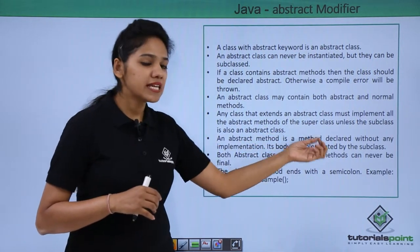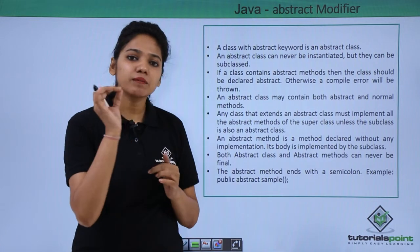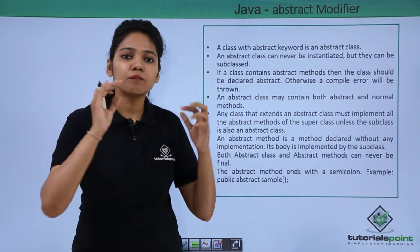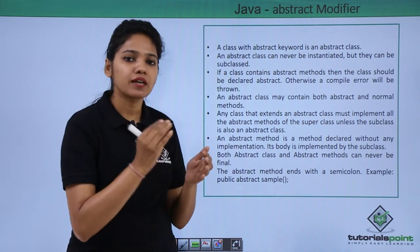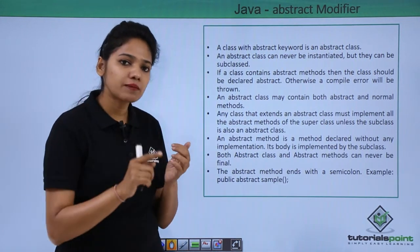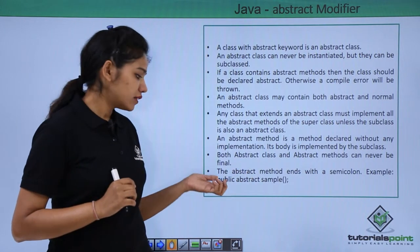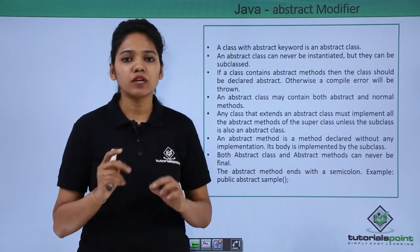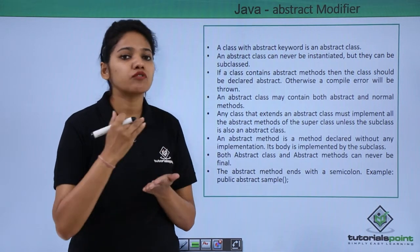An abstract method is a method declared without any implementation. You are not defining the body or the purpose of the method — you are just providing an outline, such as 'abstract void sleeping'. You declare the method but do not define it; the body of an abstract method will be implemented by another class. To write an abstract method, you specify the modifier, the abstract keyword, the method name, open and close braces, and a semicolon. If you do not define the purpose, it is abstract; if you do, it is not.